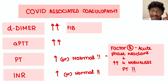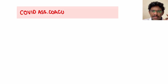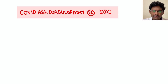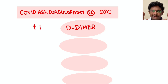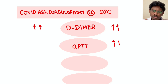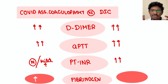Fibrinogen will be elevated because it is also an acute phase reactant. If D-dimer is increased, the first differential we think of is disseminated intravascular coagulation, DIC. How to differentiate whether it's due to COVID or due to sepsis with DIC going on in COVID? In both, D-dimer is elevated, APTT is elevated, and PT might be elevated. The only differentiating factor is serum fibrinogen levels — if fibrinogen is raised, it is due to COVID; if it is falling, then it is due to DIC.